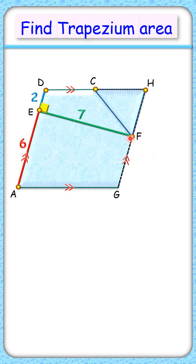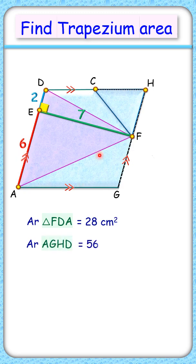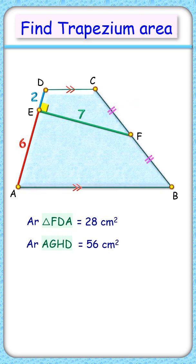In this parallelogram, the area of triangle FAD, that is half of base times height, is 28 cm². The area of the full parallelogram is twice this, which is 56 cm². Thus, the area of our original trapezium is 56 cm². That's our answer.